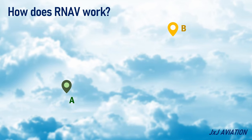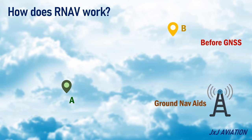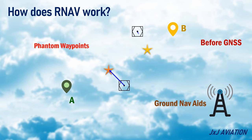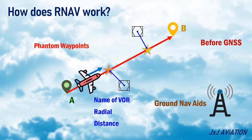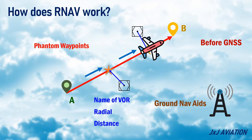How does RNAV work? Before Global Navigation Satellite System, or GNSS, was available, the ground-nav aids were used to create phantom waypoints. These waypoints had the name of the VOR, the radial, and the distance. The aircraft would fly to this waypoint and then to the next phantom waypoint, until it reaches the destination.